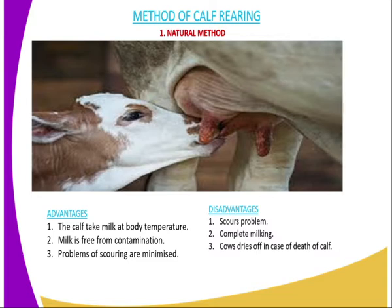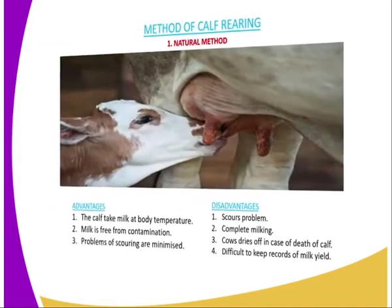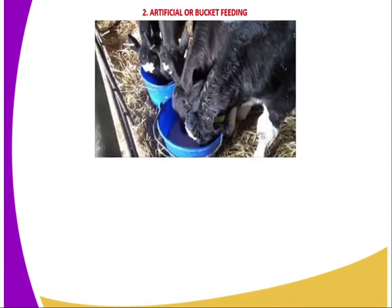Number three, the cow dries off in case of death of the calf. If the cow is the type whose milk let-down system is stimulated by the calf, upon the death of the calf the milk let-down system will not operate, and therefore the cow dries up. Number four, it is difficult to keep records of milk yield because whatever milk is produced is consumed by the calf, and the calf might go and suck before milking is done, so record keeping becomes a problem.